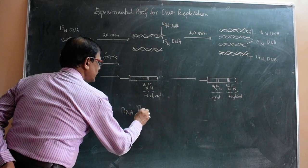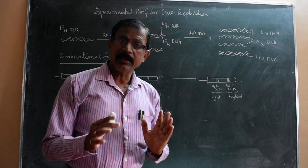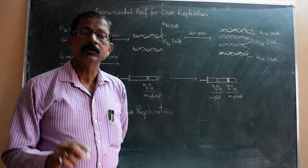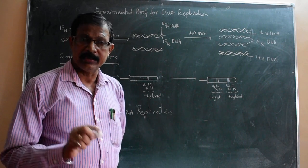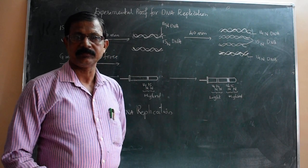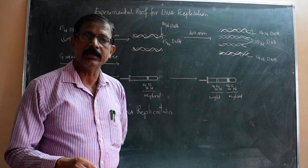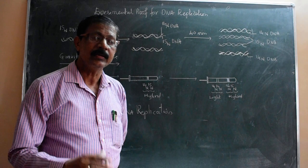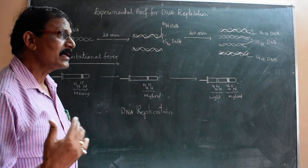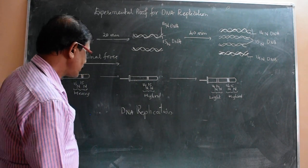What is DNA replication? DNA replication means duplication. Duplication means division - just as cells divide, DNA also divides and increases its number: one DNA into two, two into four, four into eight. DNA also increases its number, and thereby carries out the process called DNA synthesis.